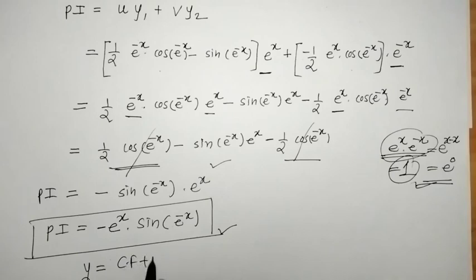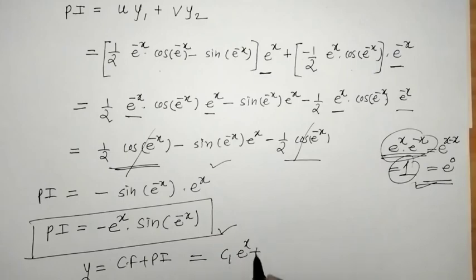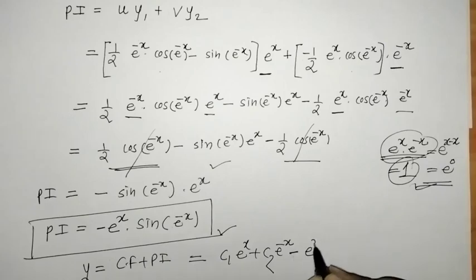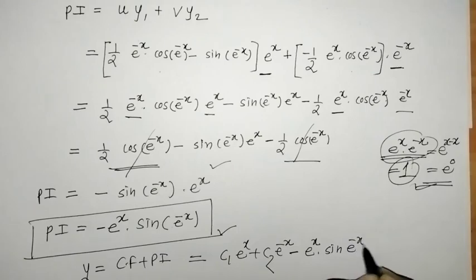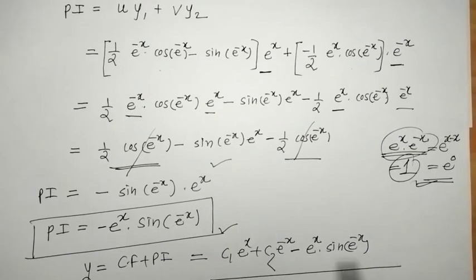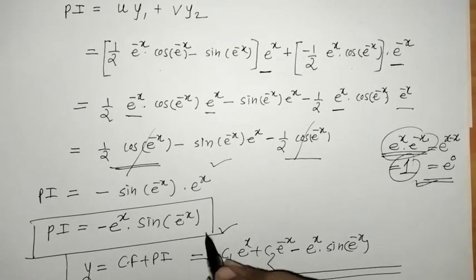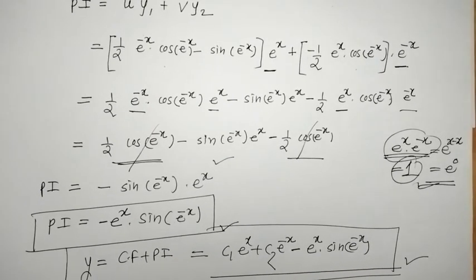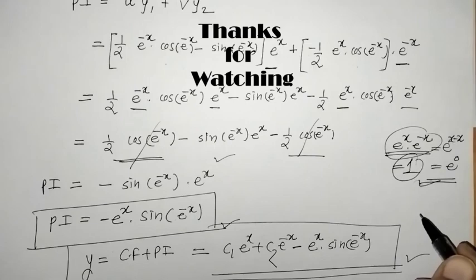Now we write the complete solution: y = CF + PI, so y = c1*e^x + c2*e^(-x) + PI, where PI = -e^(e^(-x)). This is the required solution of the given differential equation. That's it for now — see you in the next video, thank you, keep watching.